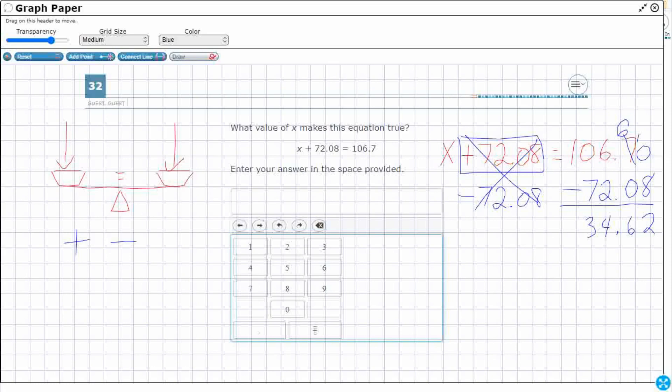If I wanted to, I could double check by adding the 72.08. All right, I can stick this back in here and say, all right, 34.62 plus 72.08. Because really, I think this x is going to equal this. Does that make 106.7? So I could double check that. But yes, that is going to equal 106.7.